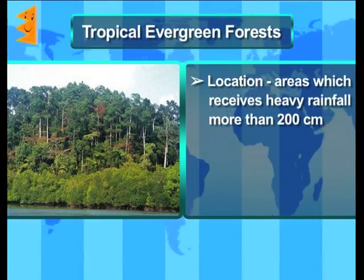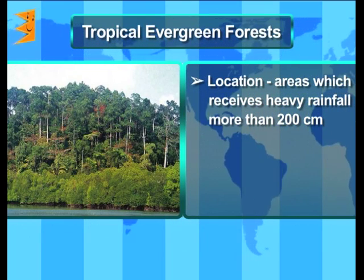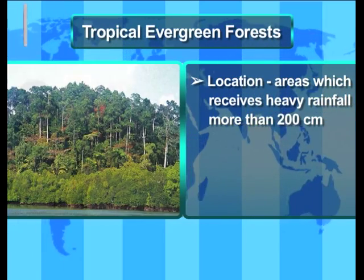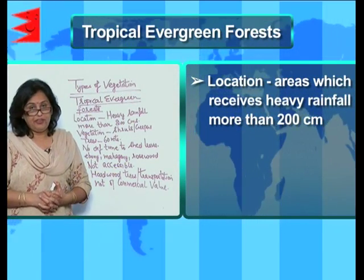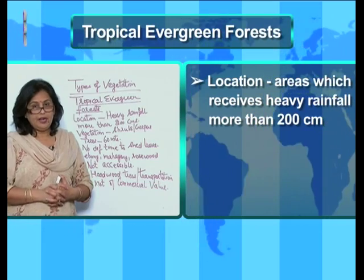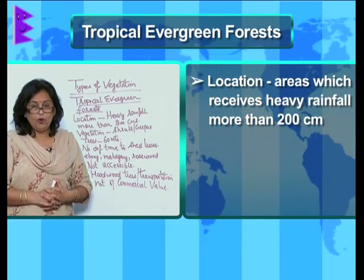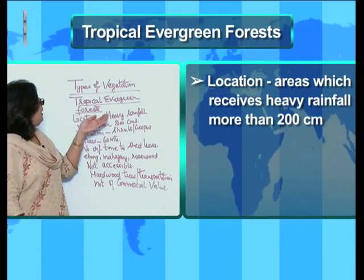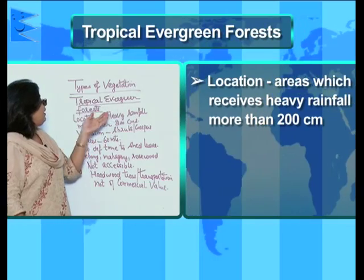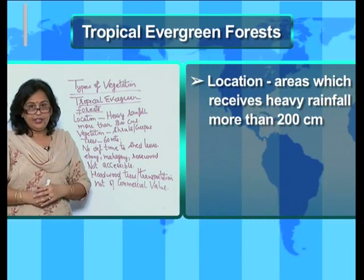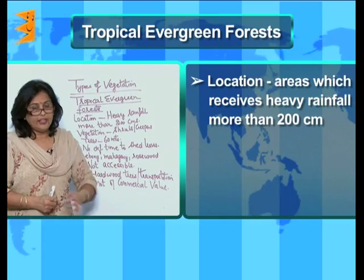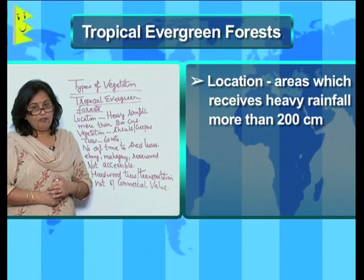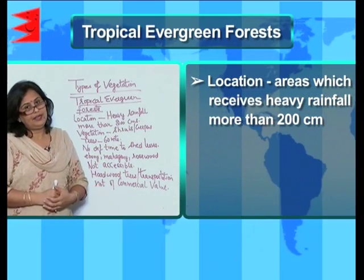The tropical evergreen forests are found in areas which receive very heavy rainfall. These could be the areas of the Western Ghats, Andaman and Nicobar Islands, Tamil Nadu, or Upper Assam. Generally these areas receive rainfall of not less than 200 centimeters.